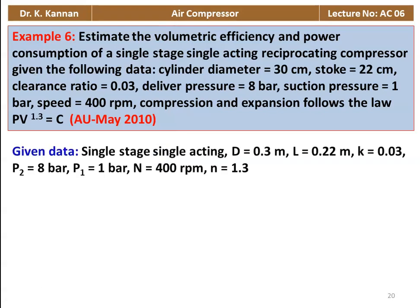We write down the given data. It is a single-acting single-stage compressor, diameter is 0.3 meter, stroke length is 0.22 meter, clearance ratio K equal to 0.03, P2 equal to 8 bar, P1 equal to 1 bar, speed equal to 400 rpm and n equal to 1.3.